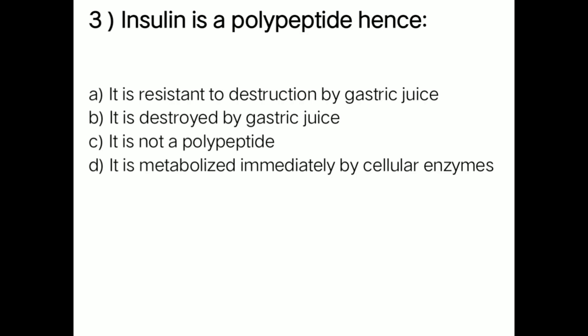Next question: insulin is a polypeptide, hence — option A: it is resistant to destruction by gastric juice; option B: it is destroyed by gastric juice; option C: it is not a polypeptide; option D: it is metabolized immediately by cellular enzymes. Right answer is option B — it is destroyed by gastric juice, because insulin is a polypeptide.